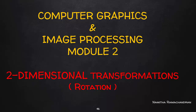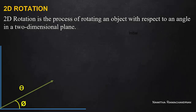Hi everyone, welcome back to this tutorial. In this video, we will cover rotation, the third form of 2D transformation. We will change the orientation of an object by rotating it at a particular angle.